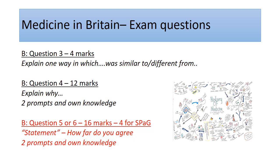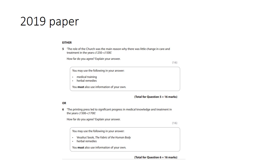On to the last question, which is what they call the statement question. They will give you a choice of two questions, generally in different time periods, and you do get extra marks for SPAG here. For example, in the 2019 paper they went back to medieval and into the renaissance period. Just make sure you take a moment to pick the question that's right for you rather than jumping in.